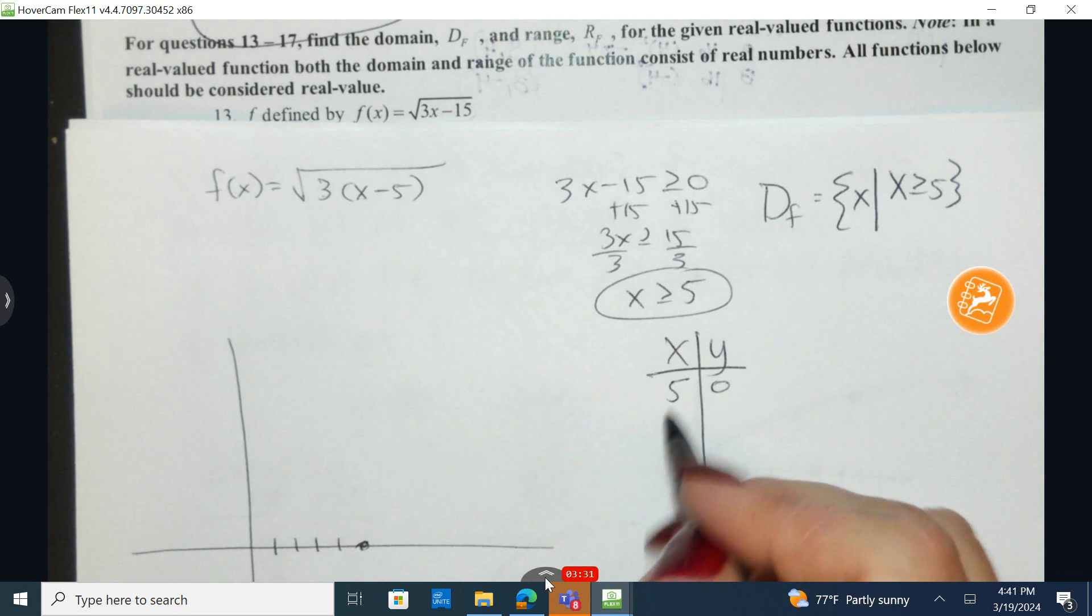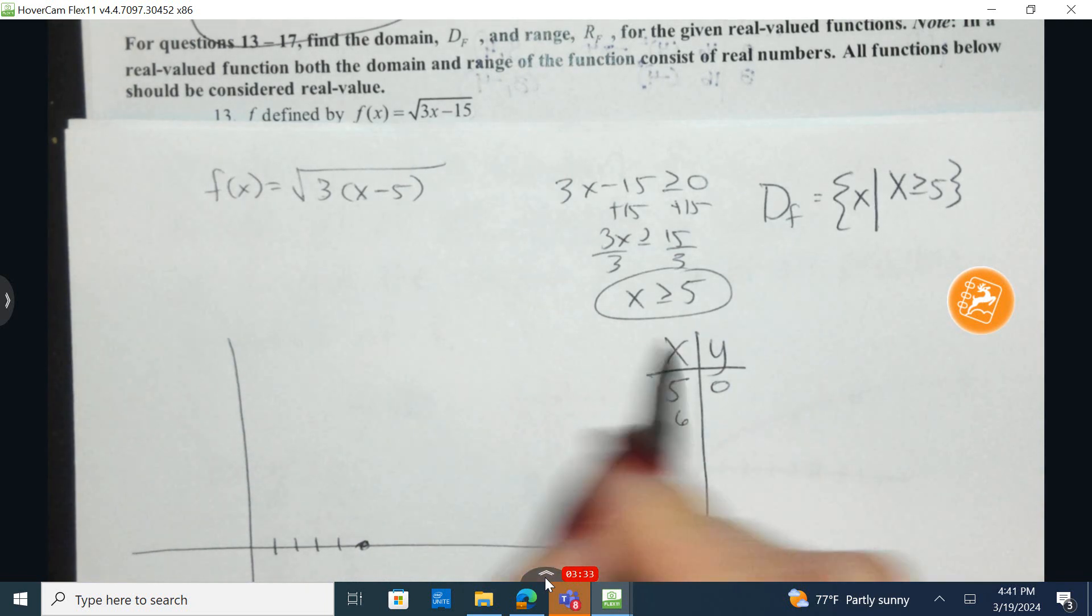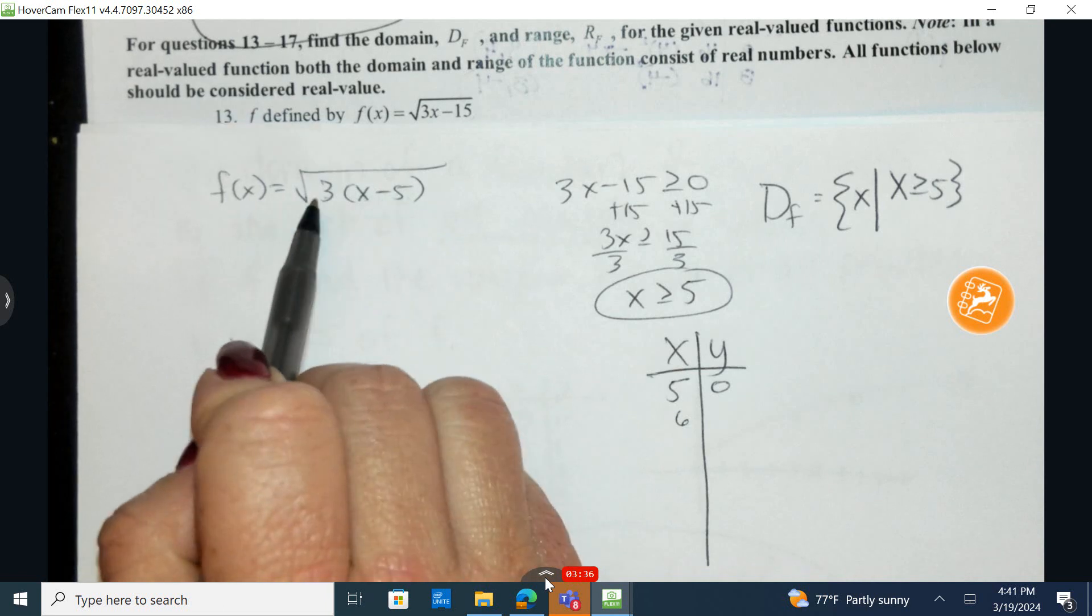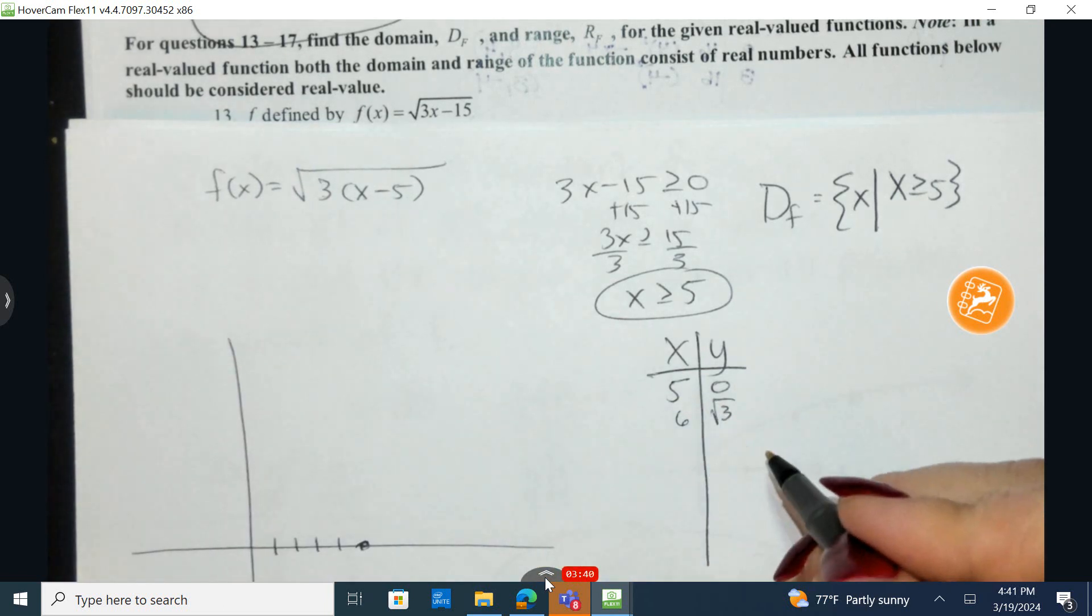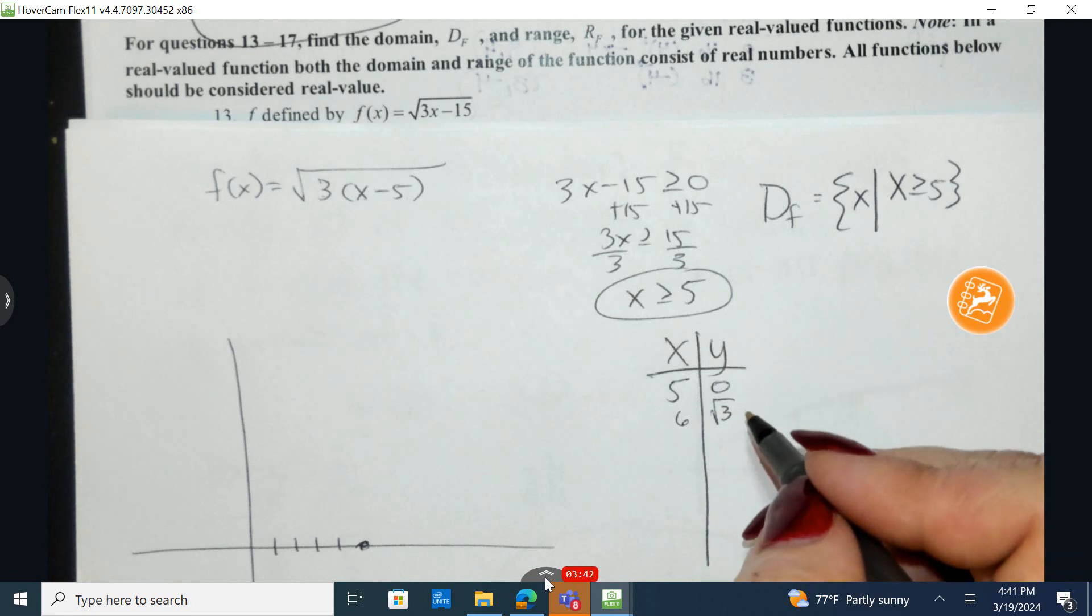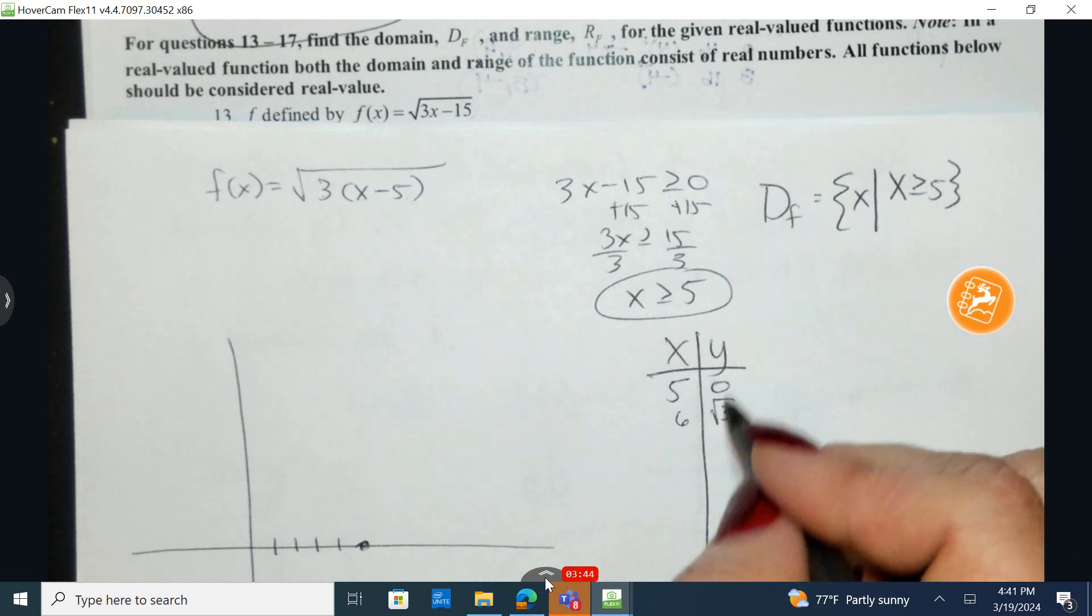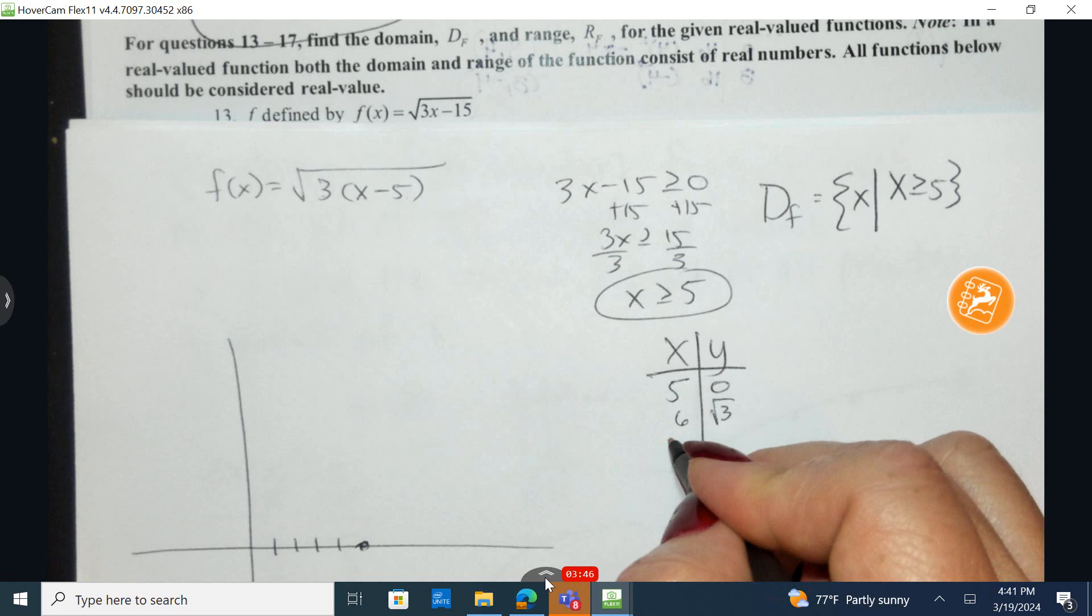Could I plug in six? Six minus five is one, one times three is three. This would be the square root of three. I could do that, but I don't really know off the top of my head what is the square root of three. I know it's less than two, but how much less?